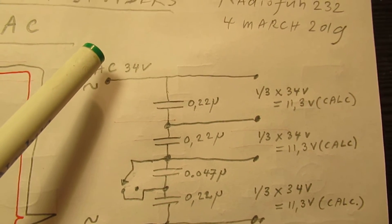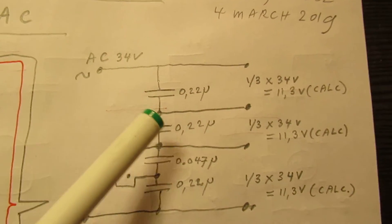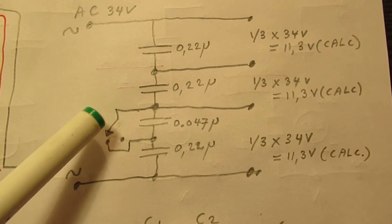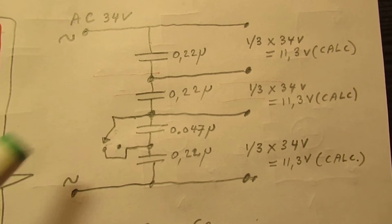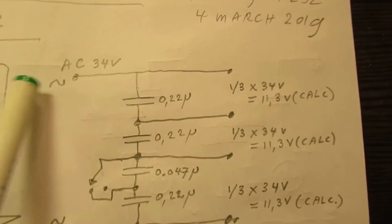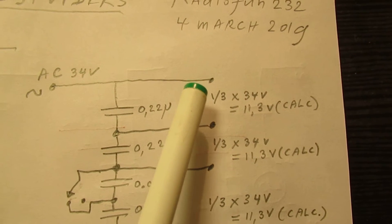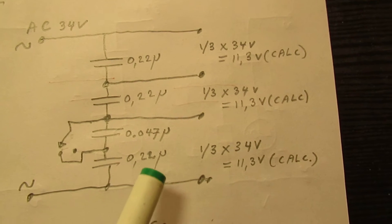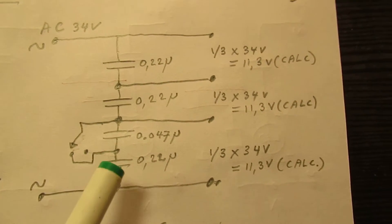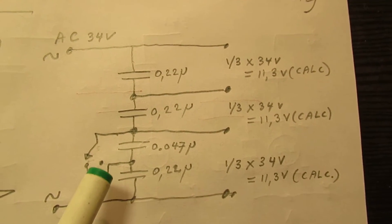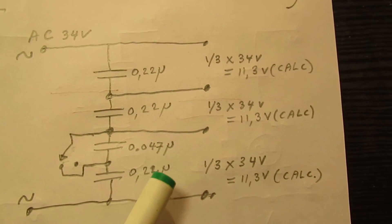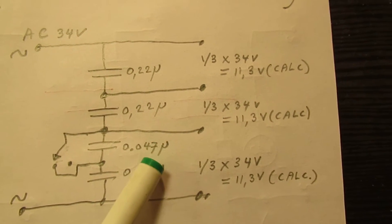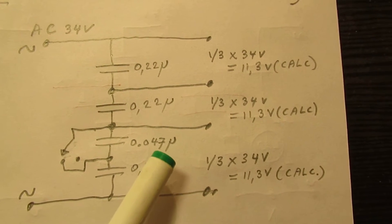Here we have the same situation. I have 34 volts, three capacitors of the same value, because this capacitor here is shorted so it doesn't play a role. Here we find the calculated voltages: one third, one third, and one third. But what happens when we open that switch so this capacitor starts to play a role? This capacitor is a big factor lower in value, 47 nanofarad, and that means this capacitor starts to play a big role.